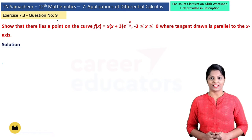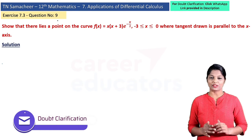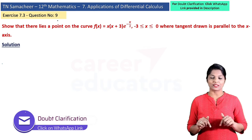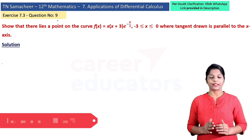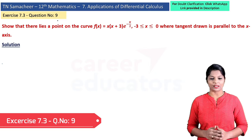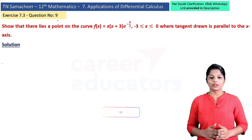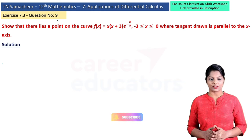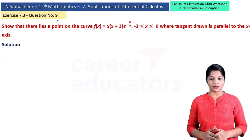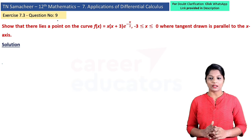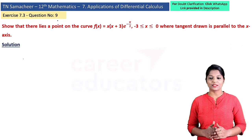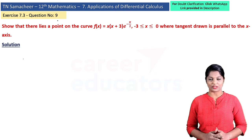Hi, I am Lakshmi and this is Career Educators. We are given the function f(x) = x(x+3)·e^(−x/2) on the interval [−π/2 − 3, 0], and the question asks us to verify that a tangent drawn to the curve is parallel to the x-axis using Rolle's Theorem.